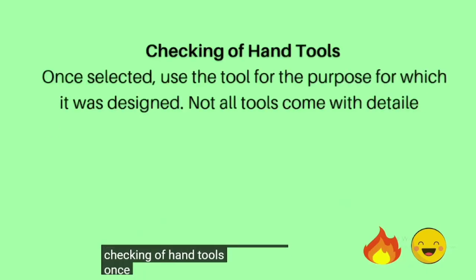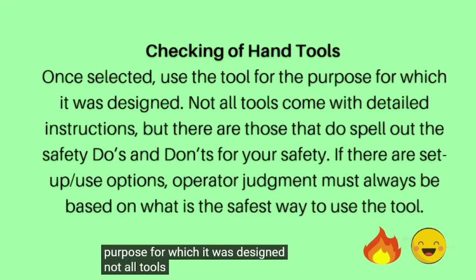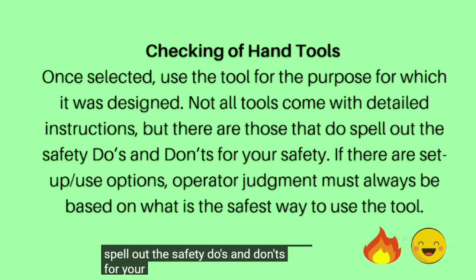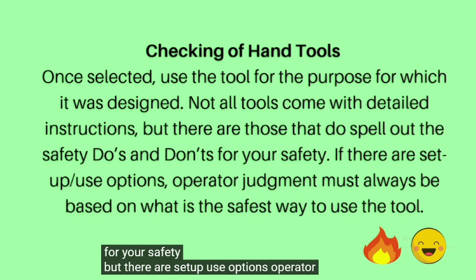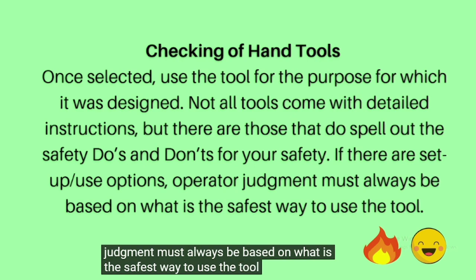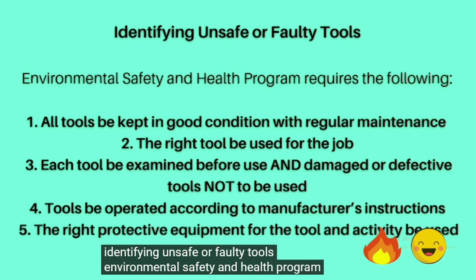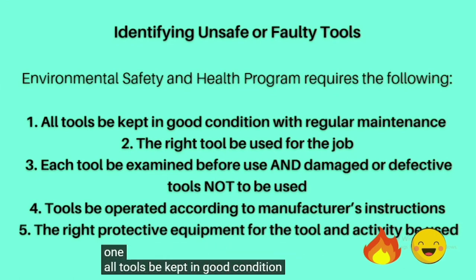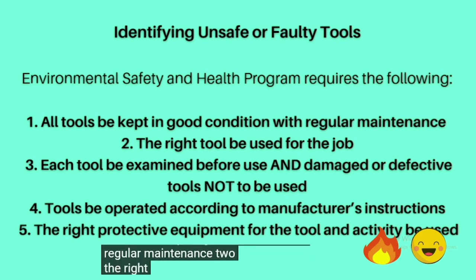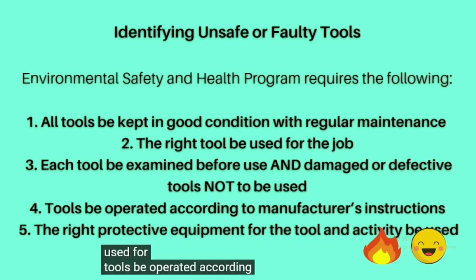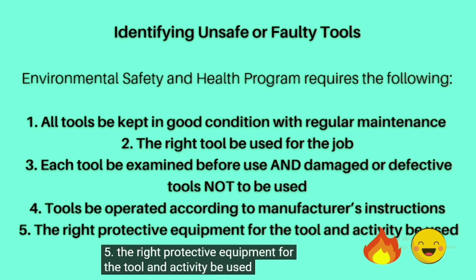When checking hand tools, use each tool only for the purpose for which it was designed. Not all tools come with detailed instructions, but those that do spell out the safety dos and don'ts. Operator judgment must always be based on the safest way to use the tool. Environmental safety and health programs require: all tools be kept in good condition with regular maintenance; the right tool be used for the job; each tool be examined before use and damaged or defective tools not be used; tools be operated according to manufacturer's instructions; and the right protective equipment be used for the tool and activity.